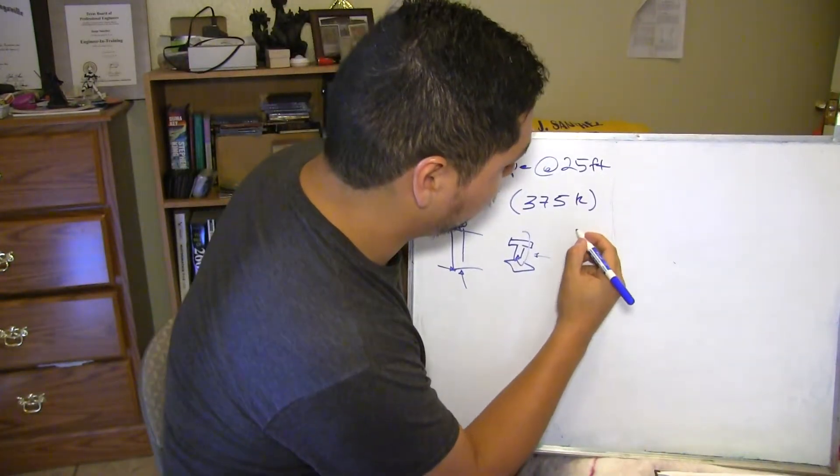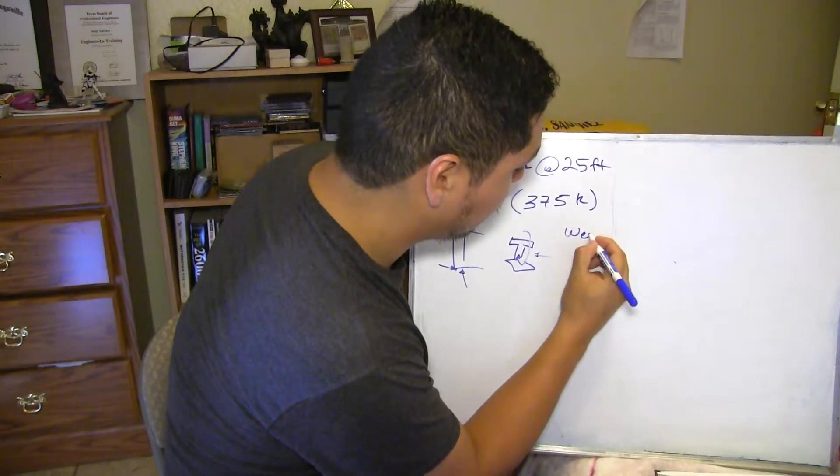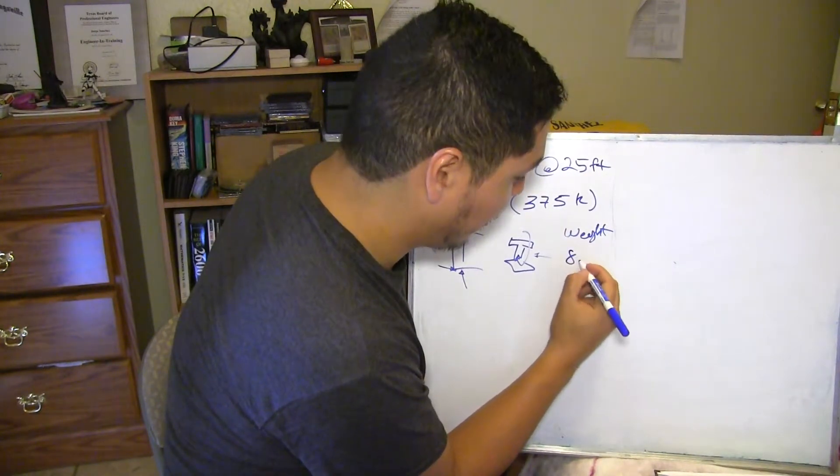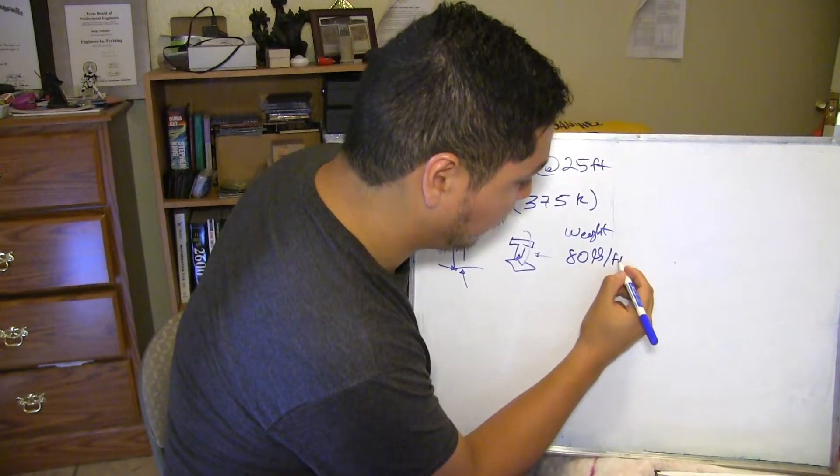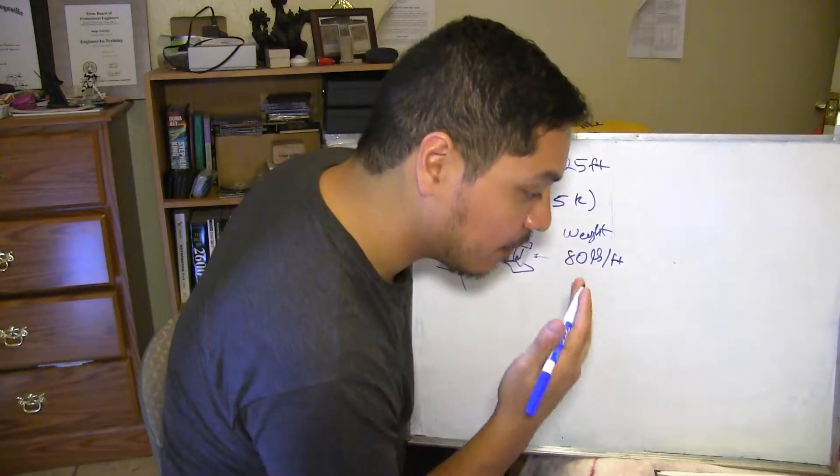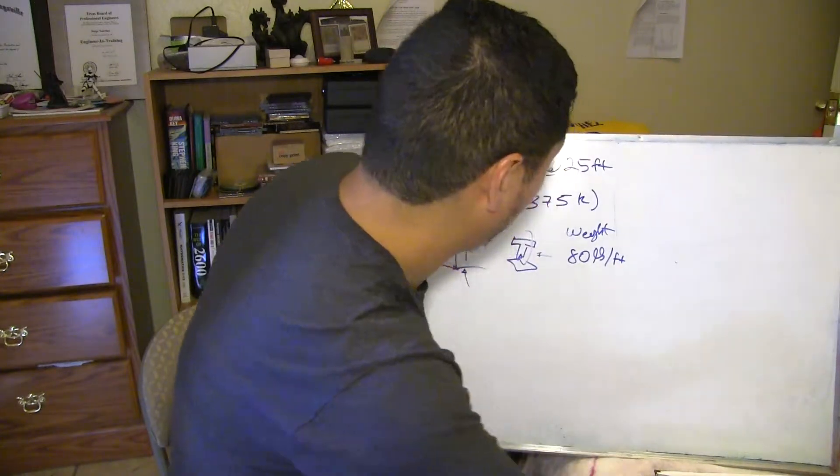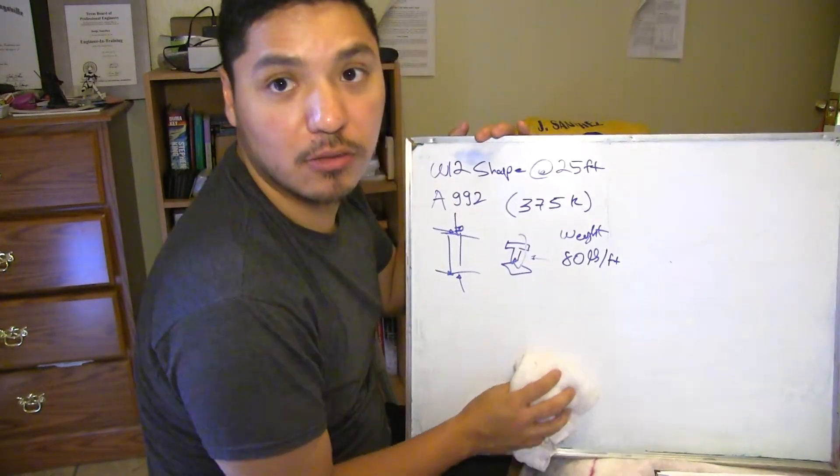Now your column weight, we're going to assume it's 80 pounds per linear foot PLF. And let's start using these parameters to solve this problem.